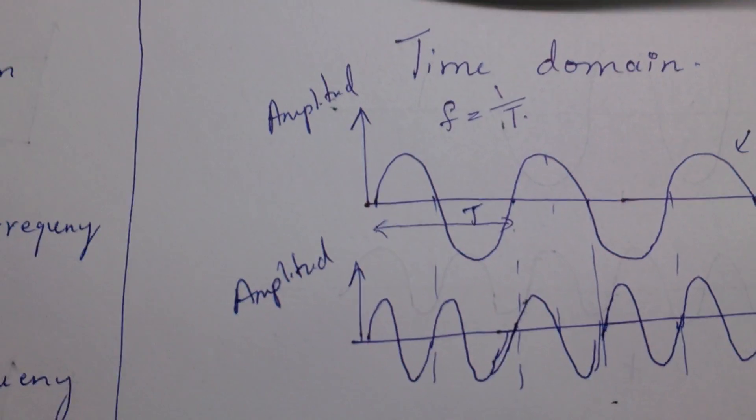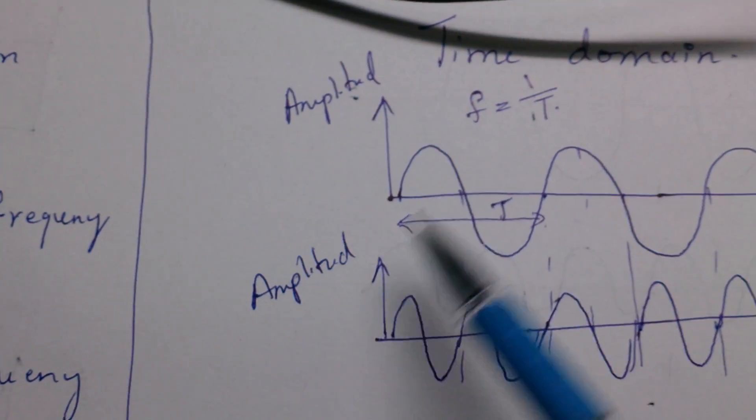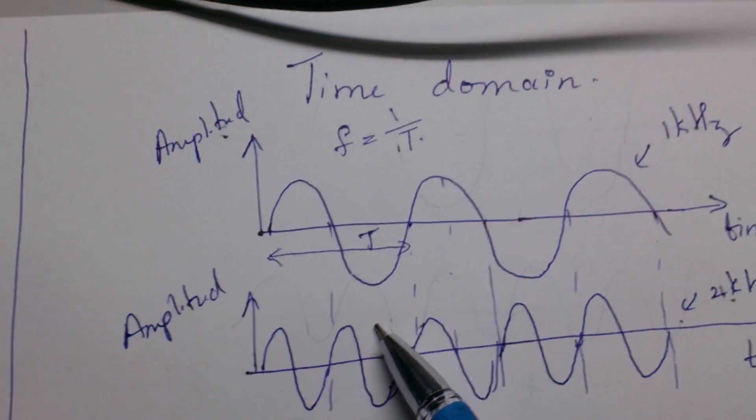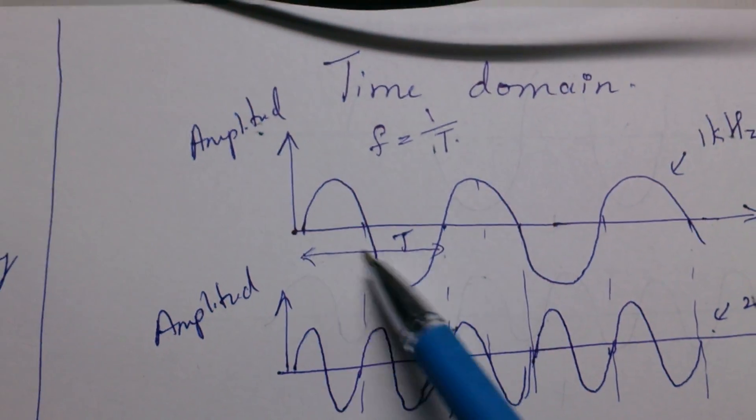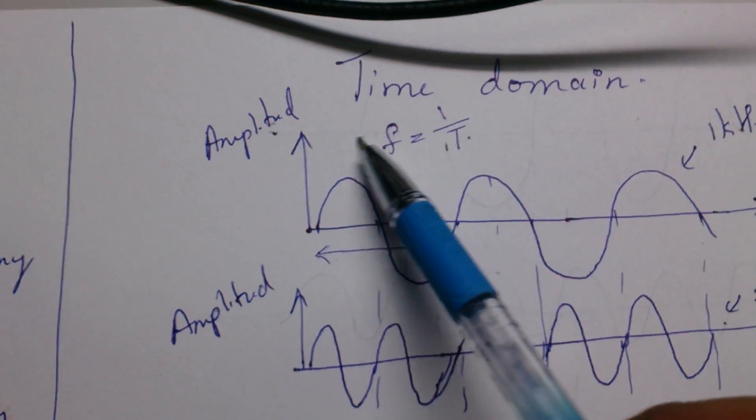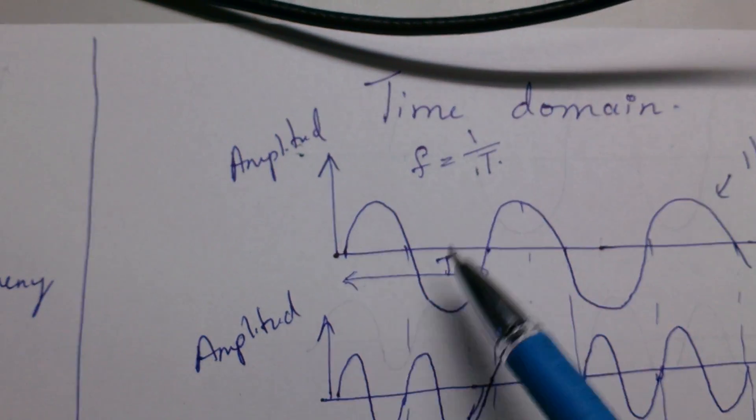To get started I will start from a time domain signal. Here I have drawn a sine wave of a known period T. T is nothing but a period and inverse of T is nothing but the frequency. So in time domain basically what you do is you plot amplitude versus time.